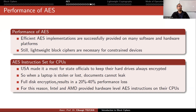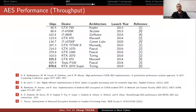If you use your CPU for full disk encryption and decryption in software, you experience a performance loss of 20 to 40%, which significantly affects user experience. For this reason, Intel and AMD provided hardware-level AES instructions on their CPUs called AES-NI — the AES New Instruction Set. An initial paper around 2010 described this.